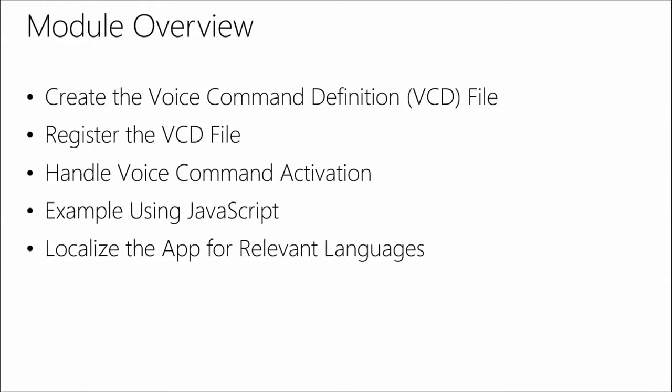There are really three steps to getting this done. These first three bullets are the three ways to implement Cortana integration: you create a VCD, you register it, and then you handle that voice command. This is actually very easy. I want you to be encouraged — this is not a difficult concept. I'm going to show you slides that walk us through the generation of this VCD file and what everything means.